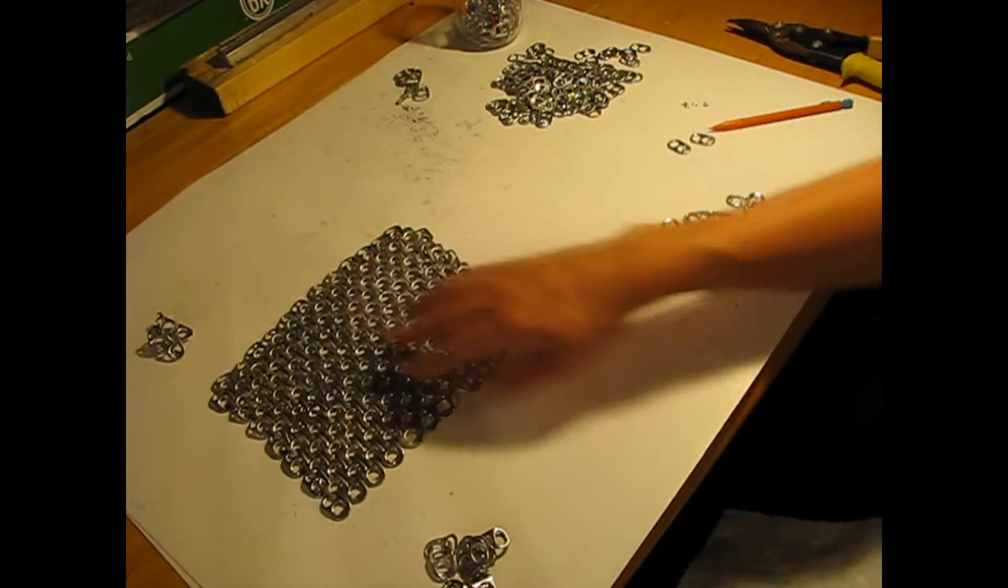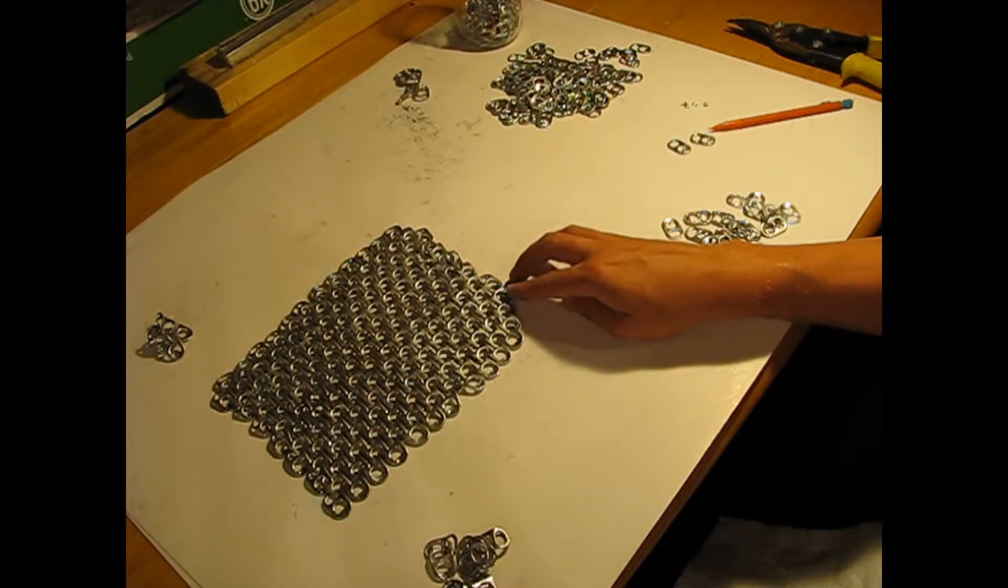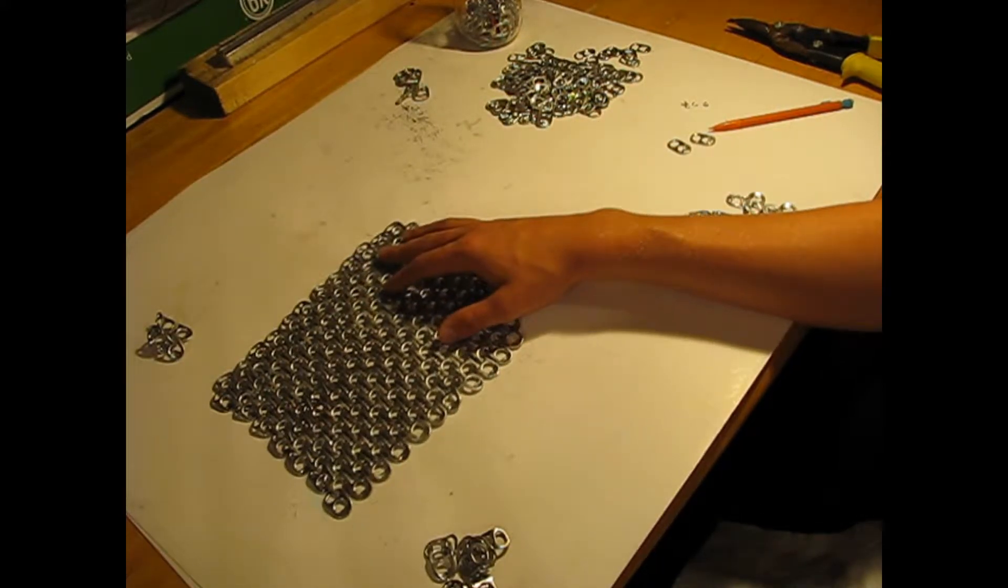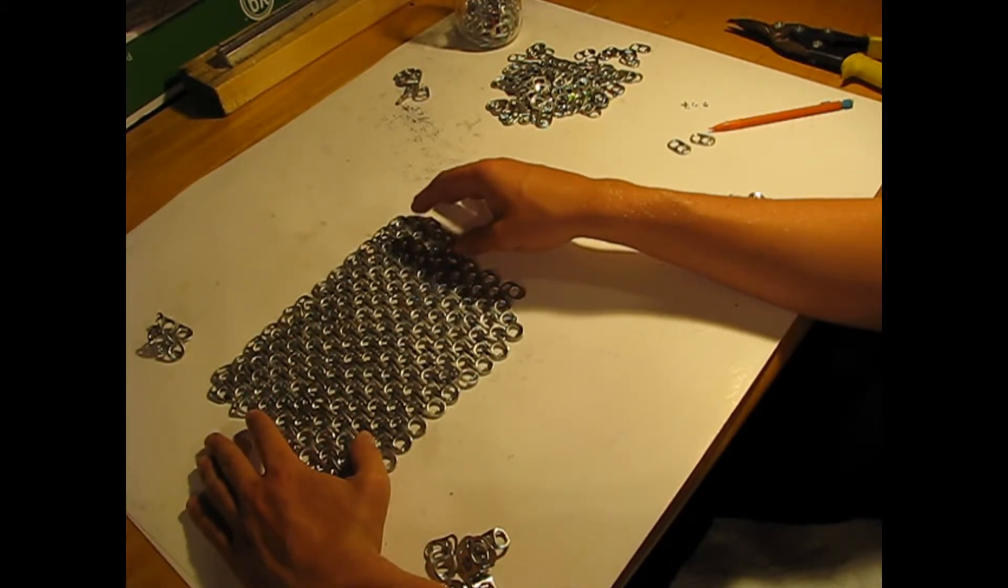Once you have a big enough sheet, you can probably make some chainmail armor or make some art, jewelry, maybe a purse. You can do a lot with these. I hope you enjoyed my short video on pop can tabs. Leave a like and subscribe.